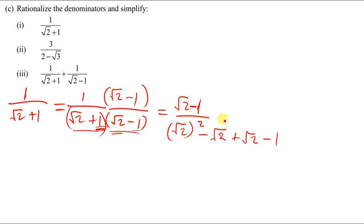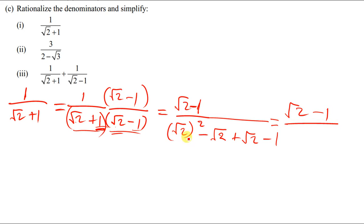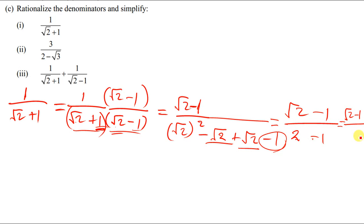We can simplify further. The numerator is root 2 minus 1. In the denominator, root 2 squared gives 2, the middle terms cancel to 0, and we have negative 1 — so the denominator is 2 minus 1, which equals 1. Therefore the final answer is just root 2 minus 1.